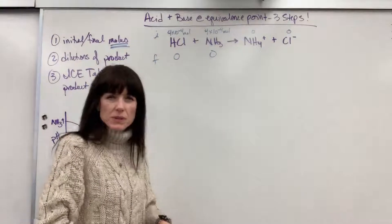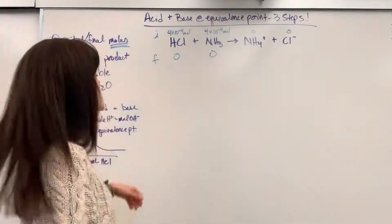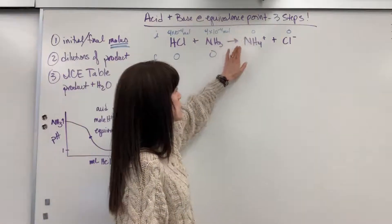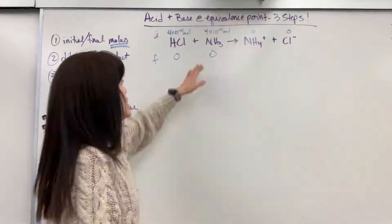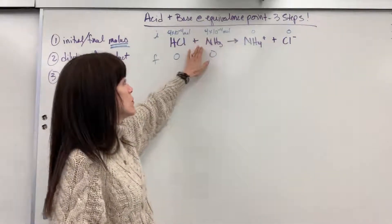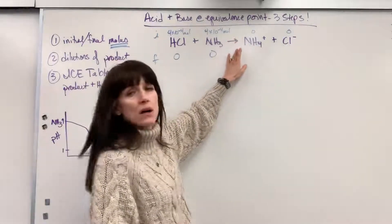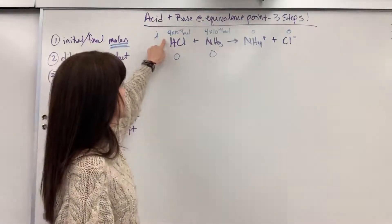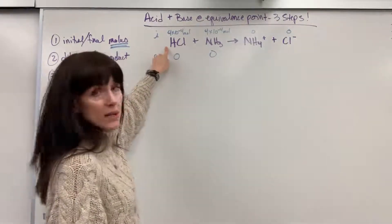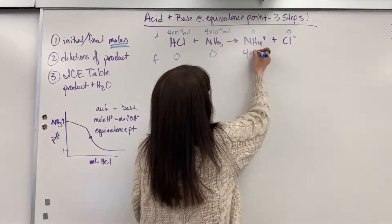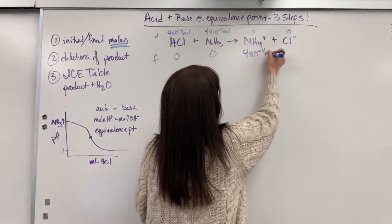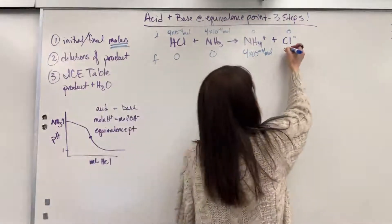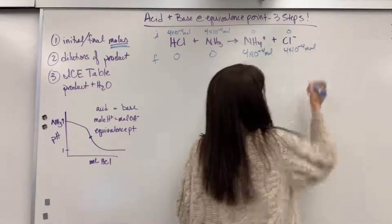So what's produced? Look at the molar coefficients. For every 1 mole of ammonia that reacts, 1 mole of ammonium is produced. So if I have 4×10⁻⁴ moles that react, it means I'm going to have 4×10⁻⁴ moles of ammonium produced. Same thing here with the chloride — 4×10⁻⁴ moles are produced.